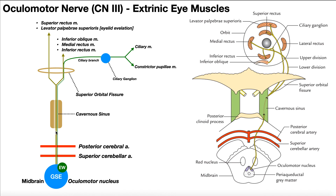The oculomotor nerve is going to enter through something called the cavernous sinus. This is actually a space within the sphenoid bone. It's going to cross through that. Now after exiting the cavernous sinus, the GSE component of the oculomotor nerve — which remember is in gold — is going to bifurcate into two separate divisions.